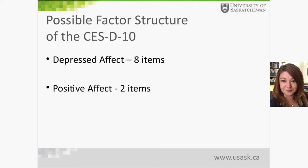The longer 20-item scale, initially described by Anderson et al. in 1994, has been the basis for this shorter version. The most commonly proposed factor structure for the CES-D 10 is a two-factor structure, with a depressed affect factor containing eight of the ten items and a positive affect factor containing the remaining two items.